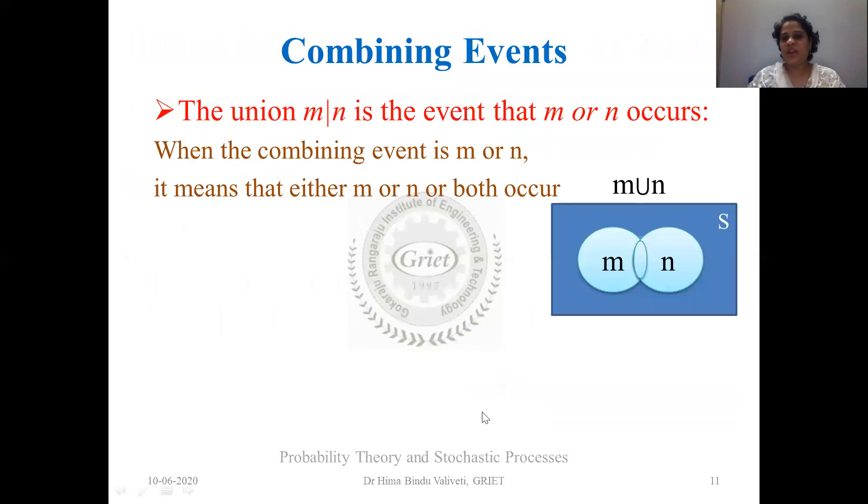Moving on, now when we talk about M union N, it is pretty obvious where M or N, either M or N. If one occurs then you're going to call that an M union N event where either M or N or both occur. That is what we are counting in the entire sample space.